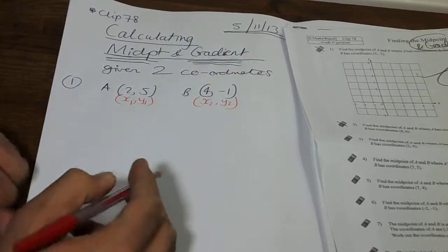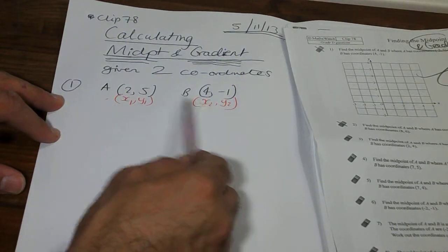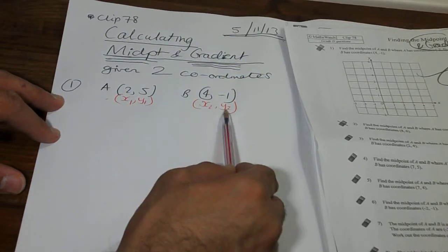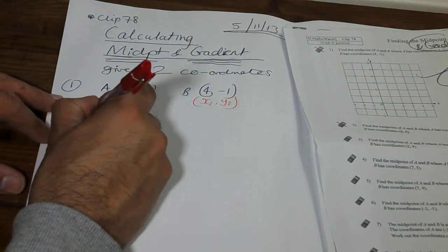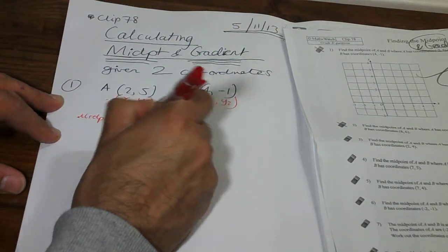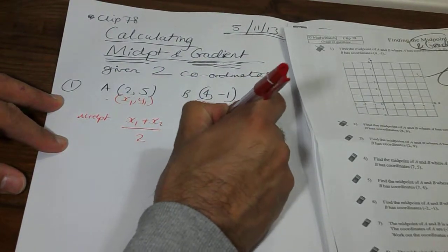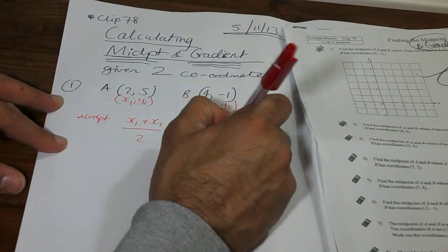Okay, now in order for us to work out the midpoint, we need to work out the average of the X values and average of the Y values. So if you write down midpoint, it's going to be X1 add X2 divided by 2, followed by the midpoint for Y, which will be Y1 plus Y2 divided by 2.